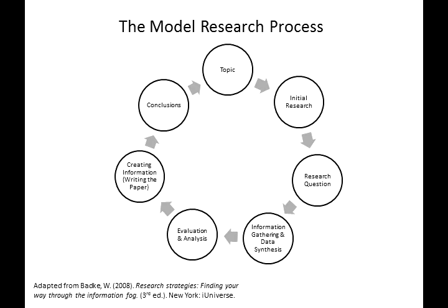We have an idea for a topic. We do some preliminary initial research. This leads us to formulate a research question. We gather information from a variety of different sources and combine those different pieces of information. We evaluate the information and analyze it in light of our research question. From this, we create new information — in university, this is often known as writing the paper. And we draw conclusions or make recommendations. This leads us to a new topic or a new aspect of the topic, and the cycle begins again. Scholars repeat this cycle, refining their research about a topic over a long academic career.